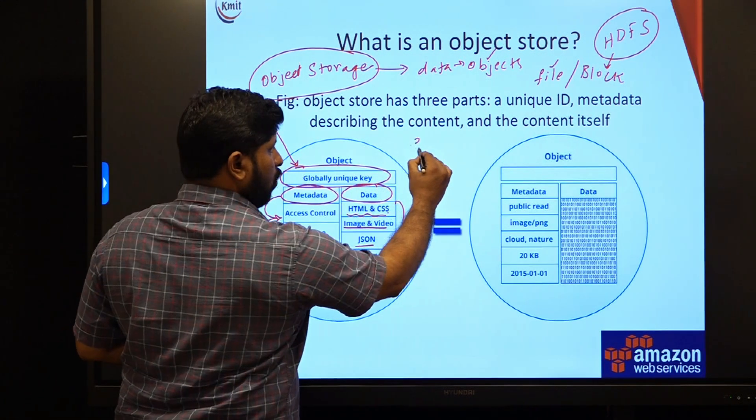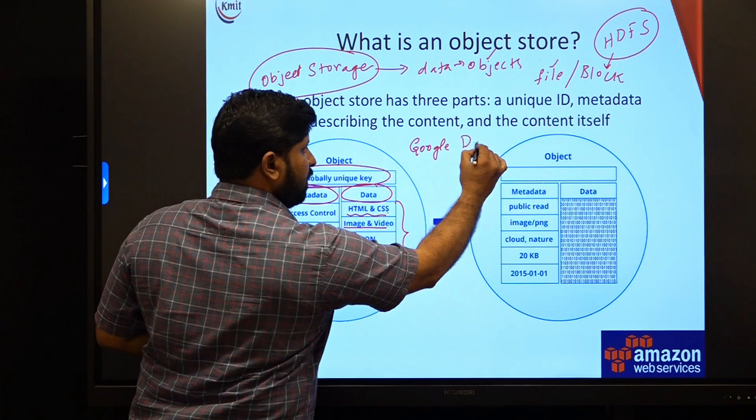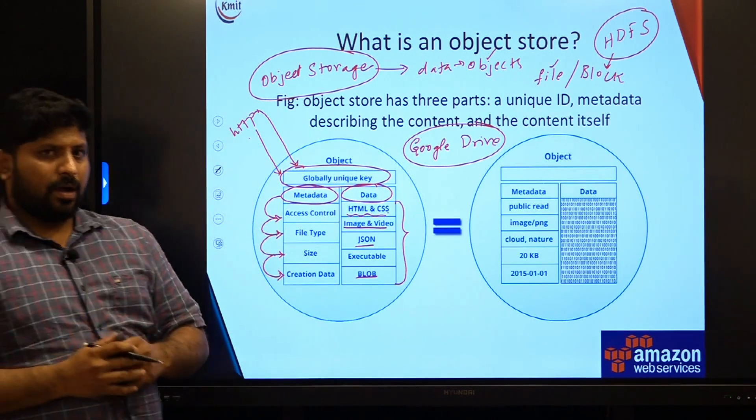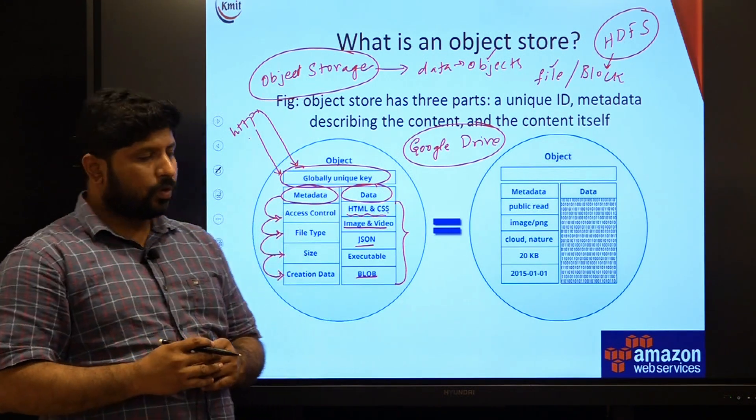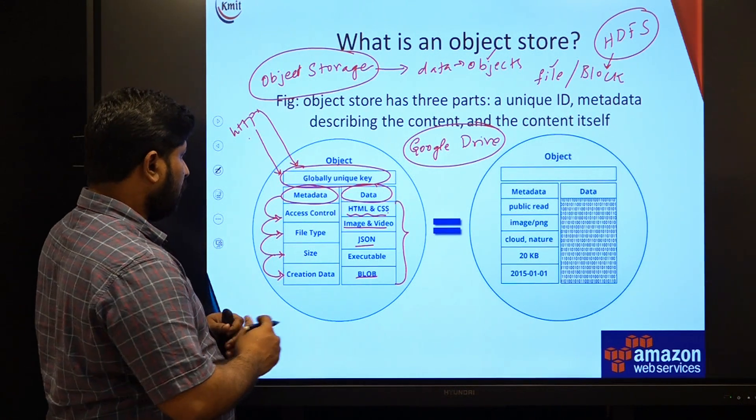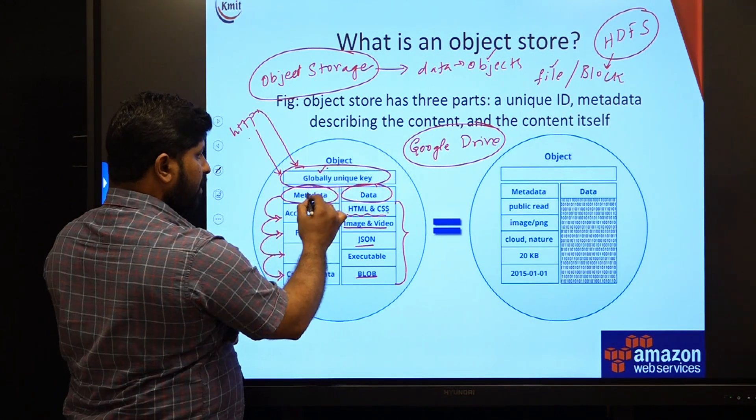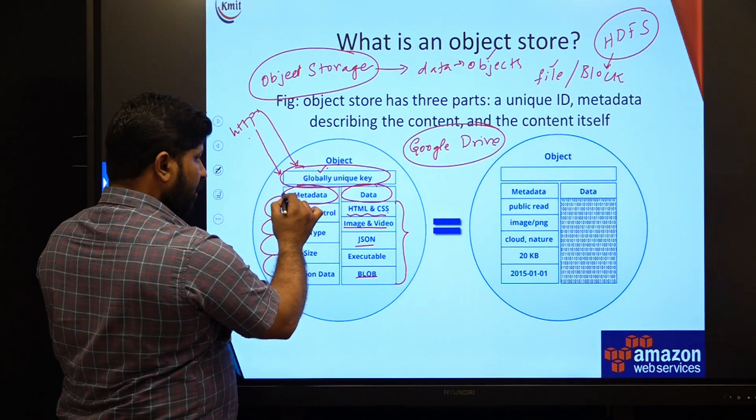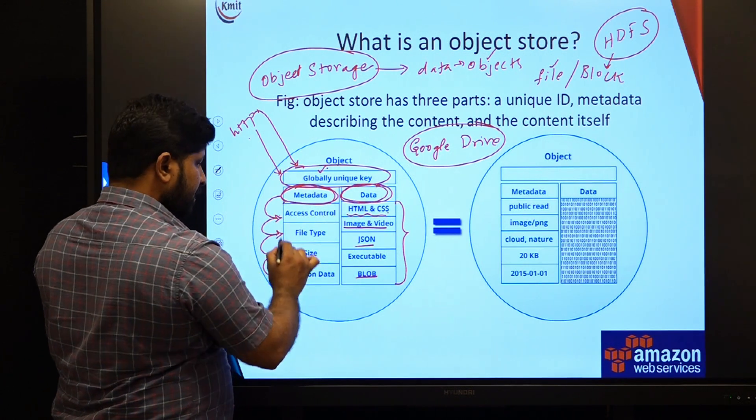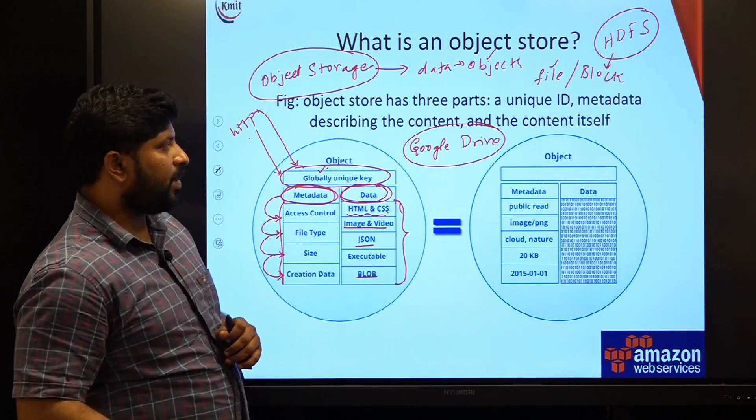If you want to have a close relation to understand, this S3 will work just like a Google drive. You can have ample amount of data stored here and it can be accessed. The object will have a unique identifier, and the unique identifier will hold two things: metadata as well as data, where metadata consists of these parameters, whereas data can be any format of data.